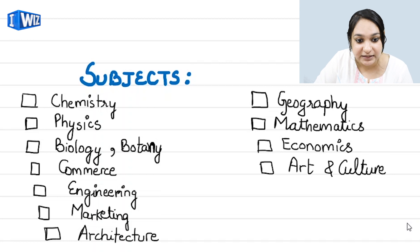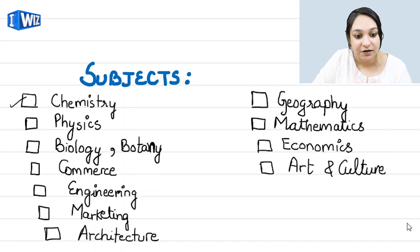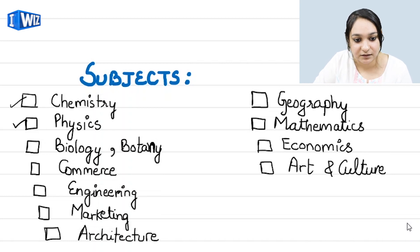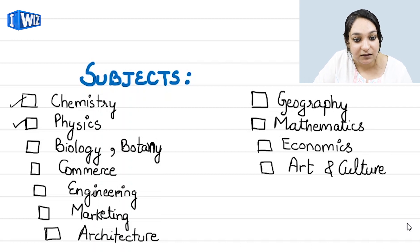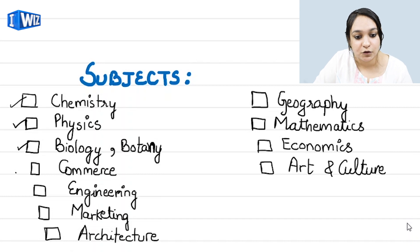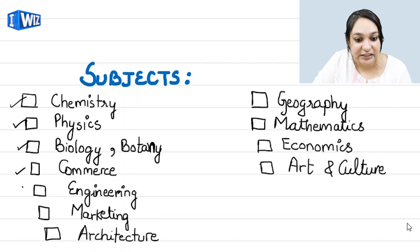First of all: chemistry, physics, biology, and botany. Then commerce, and engineering — engineering has the most difficult spelling. Remember, you first write 'engine' and then add 'e-r-i-n-g' — engineering.